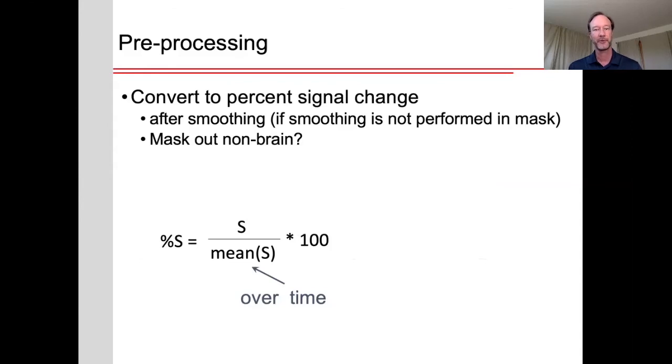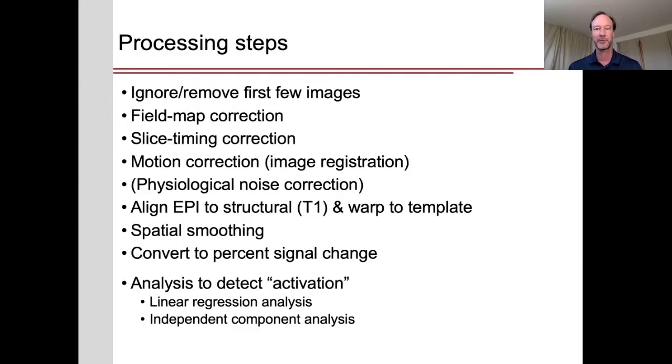And finally, we'd want to convert this to a percent signal change. The reason for that is that it's the percent signal change that's directly related to the changes in the relaxation rate. We generally want to do that after smoothing, particularly if the smoothing is not performed in the mask. And the reason for that also is we want to generally mask out non-brain areas because if we're converting to percent signal change, things outside the brain are fairly close to zero in signal, and that means the percent signal change would get quite large and then blow up. So these are some of the common preprocessing steps that are applied. The next lecture will go into the analysis of how to detect the activation.